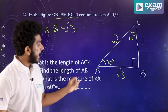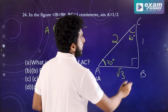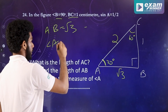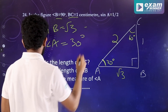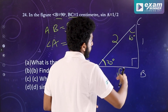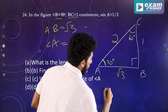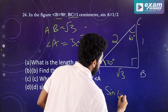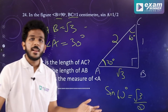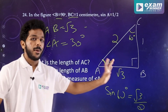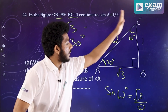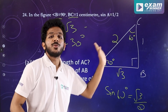What is the measure of angle A? Angle A is 30 degrees, using the ratio 1 opposite 30 degrees. Then what is sin 60? Sin 60 is opposite over hypotenuse, which is root 3 by 2. The ratios are: 30 degrees opposite 1, 60 degrees opposite root 3, 90 degrees opposite 2.